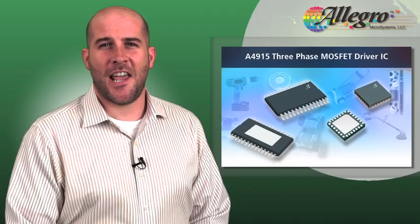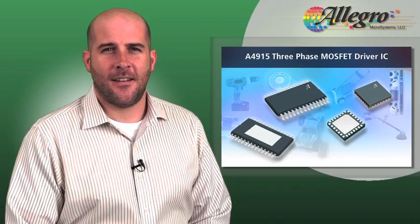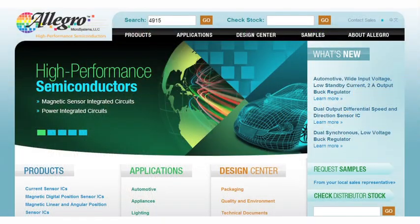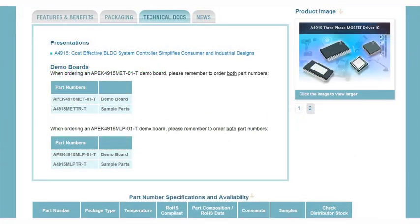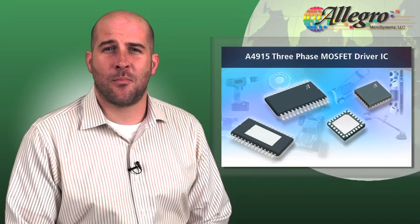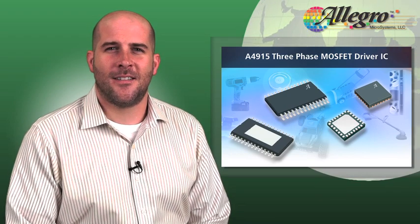Getting a board for the A4915 is easy. Just go to AllegroMicro.com, type 4915 in the search box, then go to the A4915 product page and select your board based on package type. And remember that Allegro application support is always available. Until next time.